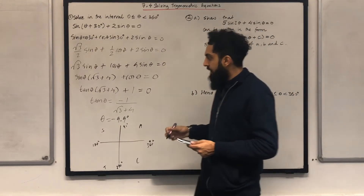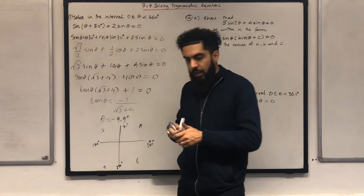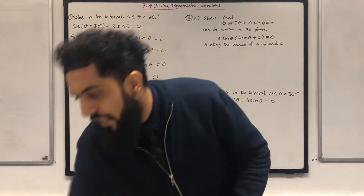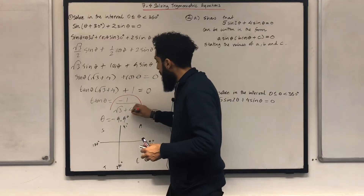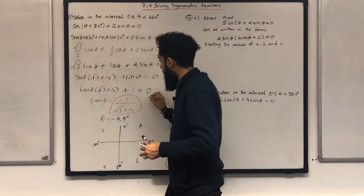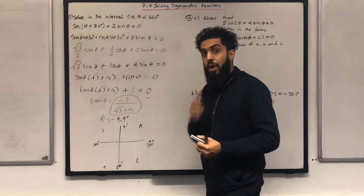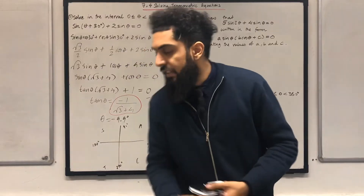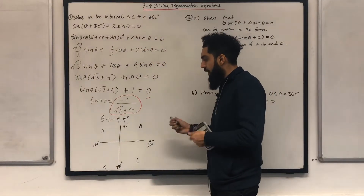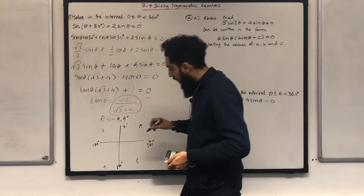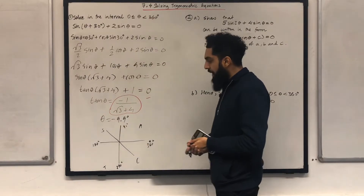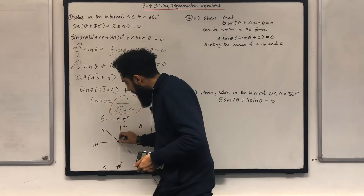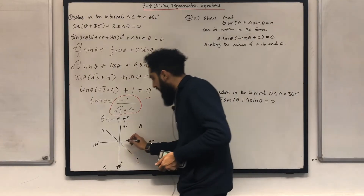Going back to the value of tan theta, I can see that tan theta is negative. We know that tan theta is negative in two quadrants, and those quadrants are the S quadrant and the C quadrant. These two acute angles will just be 9.9 degrees each.